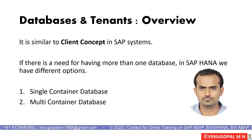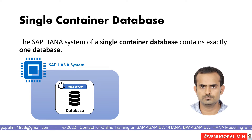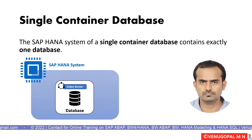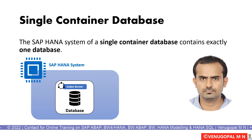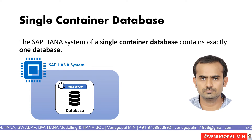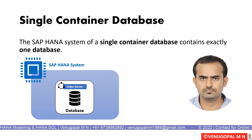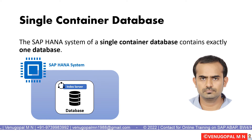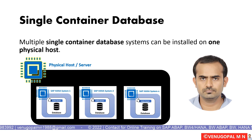Moving on to single container database: an SAP HANA system with a single container database will have only one database, as you can see from this pictorial representation. I have an SAP system and it has only one database as its back-end database. We call this kind of configuration a single container database — meaning a particular SAP HANA system ID will have only one database in the back-end.